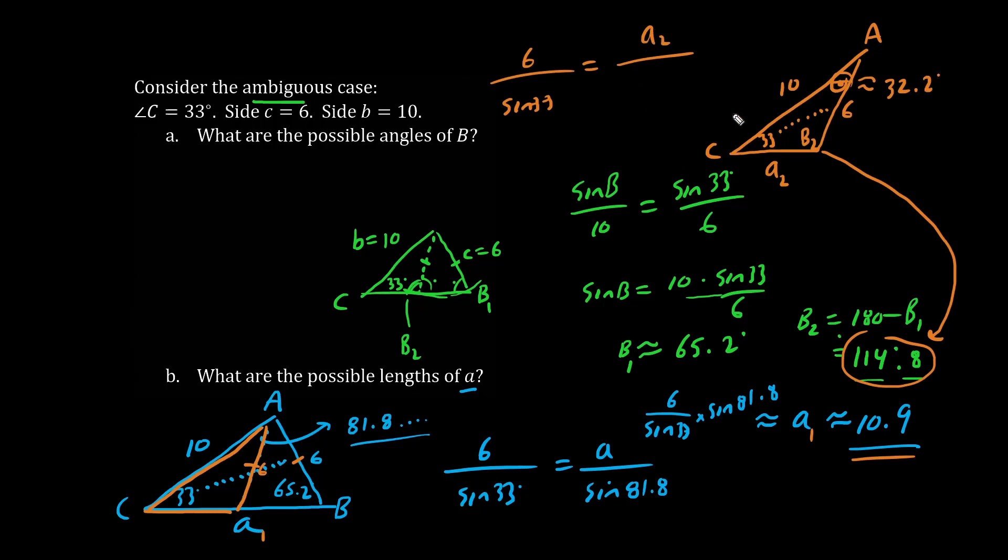So we have A2, playing sine law catch, over sine of 32.2. Now of course on your calculator, keep all your digits of accuracy. Multiplying both sides, we have A2 equals sine 32.2 multiplied by 6 over sine 33, which is approximately 5.87. So this here is a second possible length of A.